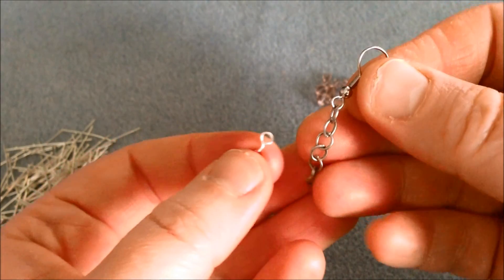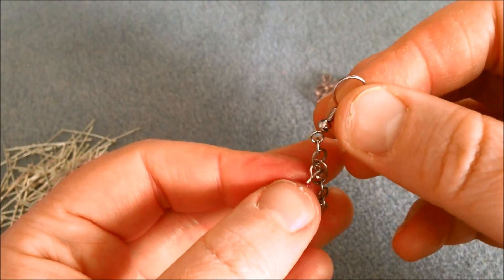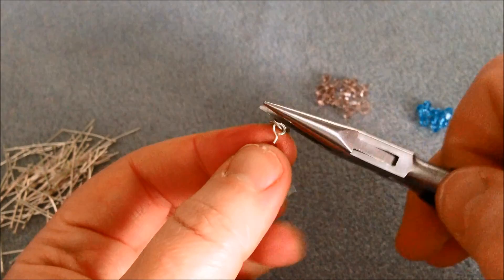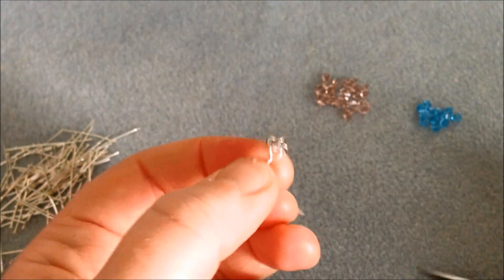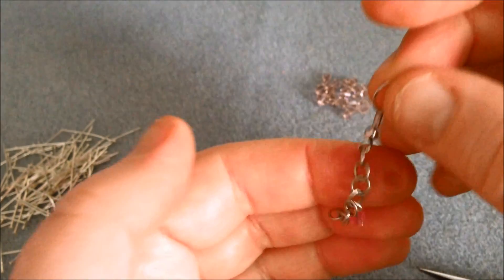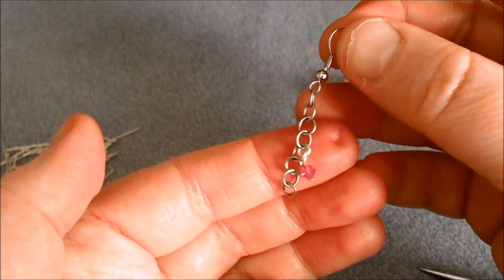Now since I don't have any other dangles here yet I can put this anywhere I want to so I'm just going to put it right there and then just close the loop back up just like that by pulling away from yourself. And here we have a first dangle on our earring.